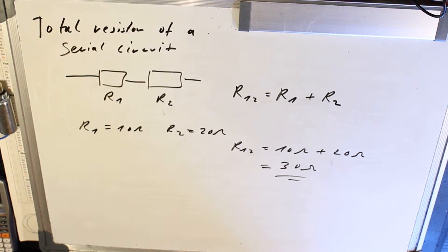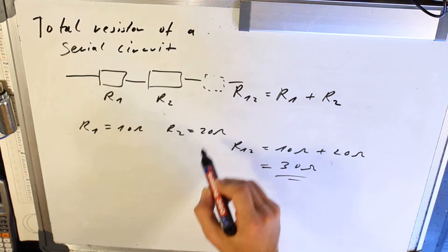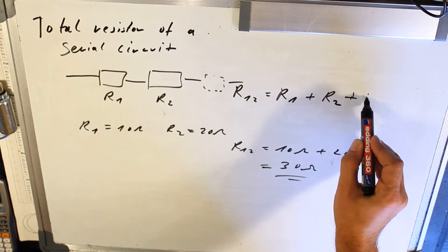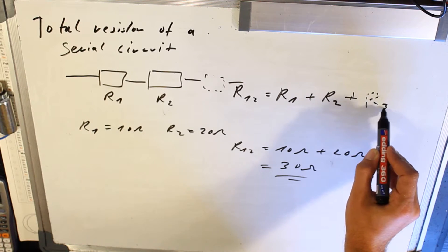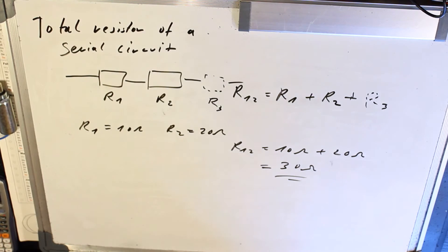So that's very easy to calculate the total resistor of this serial circuit. For example, if you have another resistor, you put here R3 for example. So it's very easy.